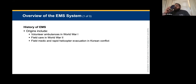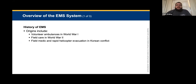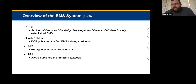The origins of EMS include volunteer ambulances in World War I, field care in World War II, field medics, and rapid helicopter evacuation from the Korean conflict. All of those interest me because they're part of how EMS evolved and where we came from. As recently as the 1960s and early '70s, ambulance services varied widely in the US — some areas didn't have them, some may have just had a hearse that doubled as a transport. If you didn't make it, they'd continue on to the funeral home.